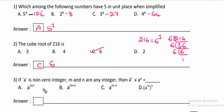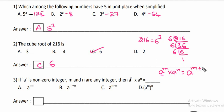If A is a non-zero integer, M and N are any integers, then A to the power of M into A to the power of N is equal to — the law of indices shows that when the bases are same, you have to add these indices, that is the powers. So A to the power of M plus N is the correct answer. Therefore, option B, A to the power of M plus N, is correct. Then we move on to the next question.